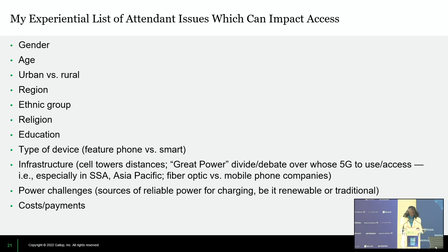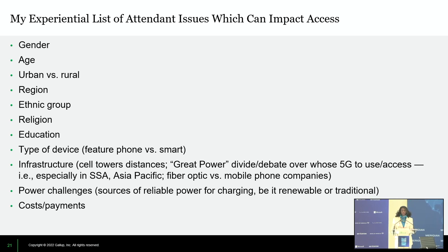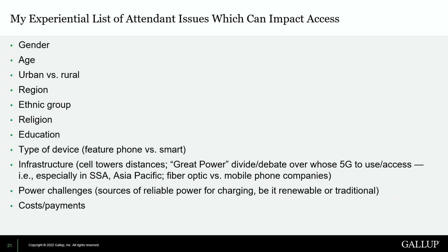Perhaps most important from my years of work are power challenges. If you have inconsistent power — whether traditional or renewable — how do you keep your phone charged? About 600 million people in Sub-Saharan Africa do not have electricity on a daily basis. And then there's affordability: do you choose between buying a phone credit or buying bread for your children? That debate is happening all across the developing world.